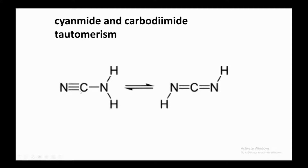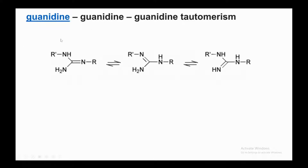Cyanamide–carbodiimide tautomerism: the nitrile (triple bond C≡N) tautomerizes into carbodiimide, where carbon forms two double bonds — one with each nitrogen (N=C=N). Next is guanidine tautomerism: guanidine has an NH2 group, an NH group, and a C=N group. The double bond between carbon and nitrogen tautomerizes — one nitrogen donates its proton to the adjacent nitrogen bearing the R group, and the double bond shifts to that nitrogen. Multiple guanidine tautomeric forms exist.